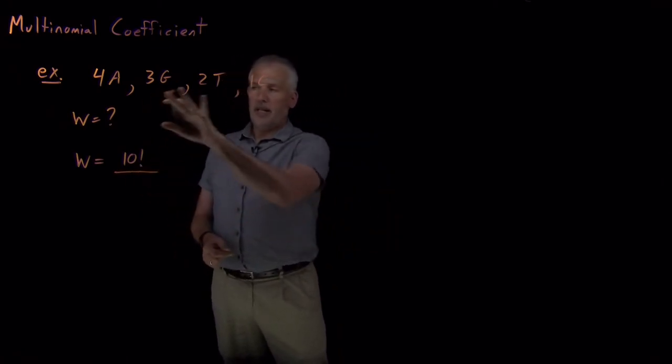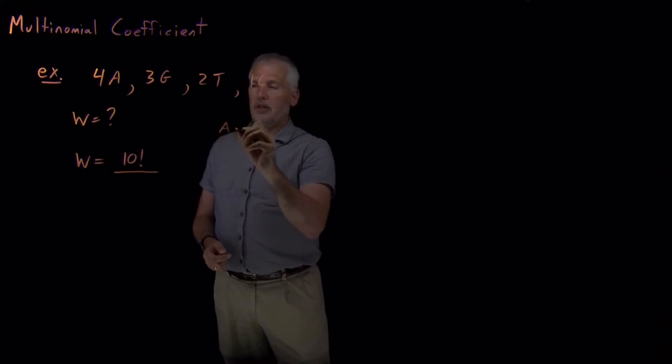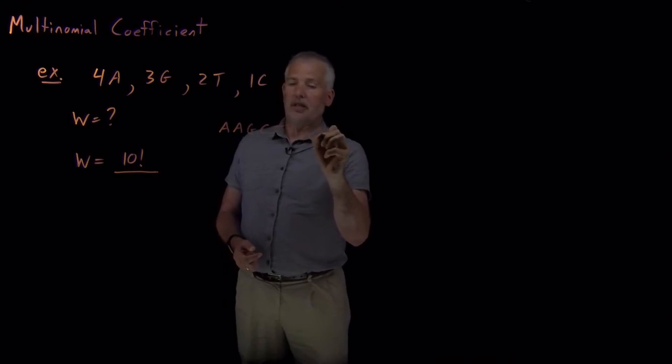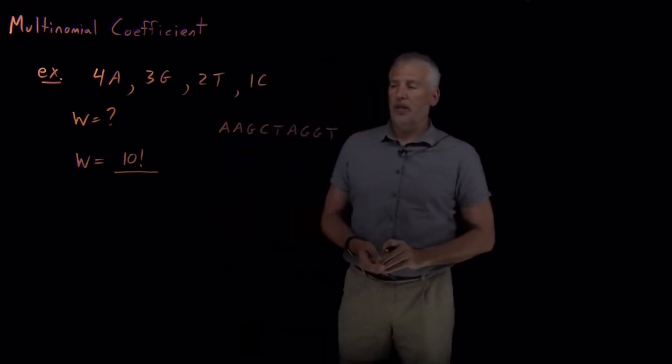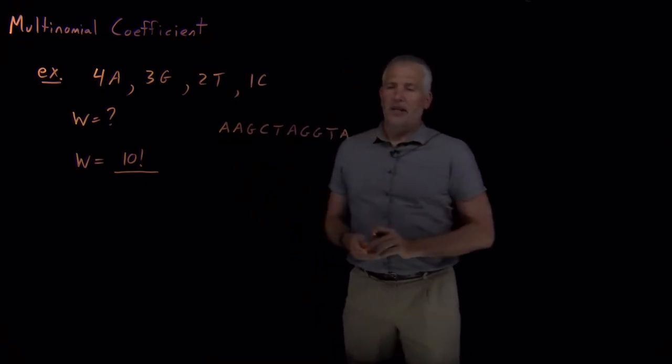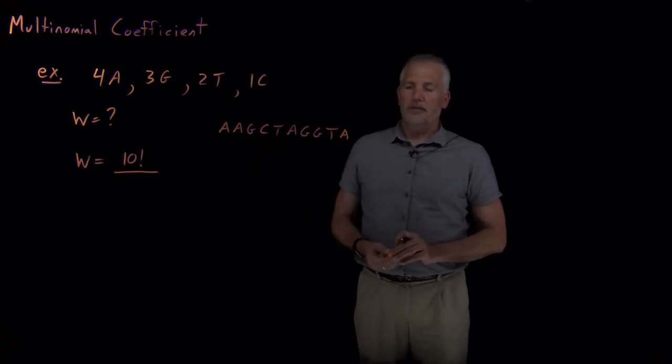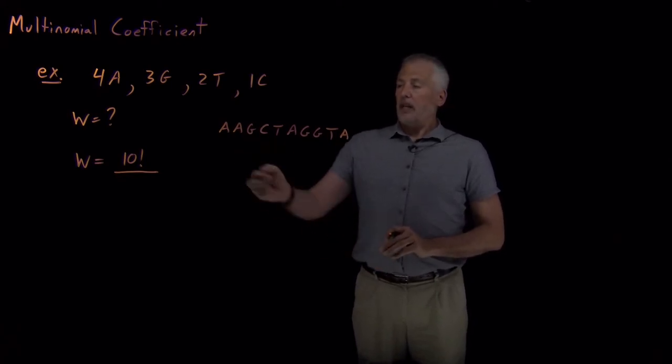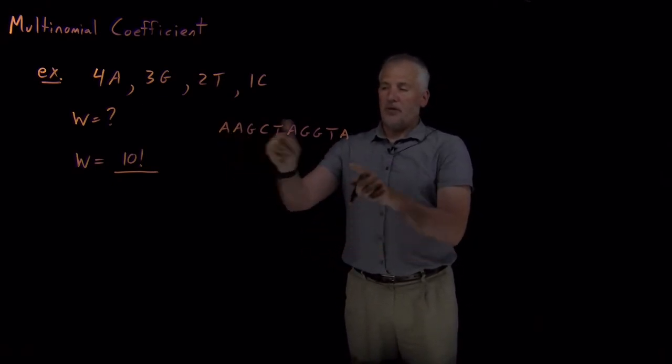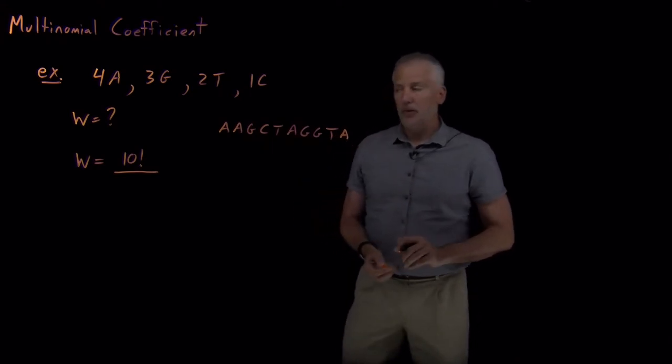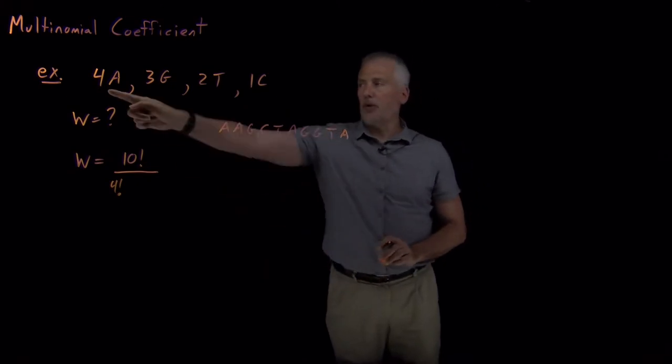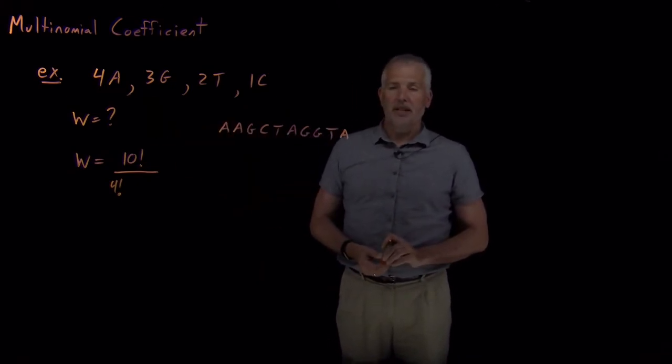If I write down any particular orientation, let's go ahead and write down one: A, A, G, C, T, A, G, G, T, and then I need a fourth A. There's one of my orientations of these 10 bases. If I switch these two A's I get the exact same result. There's four different A's that I can shuffle around in 4 factorial different ways. So I have to correct by a factor of 4 factorial because I have four indistinguishable A's to shuffle around.